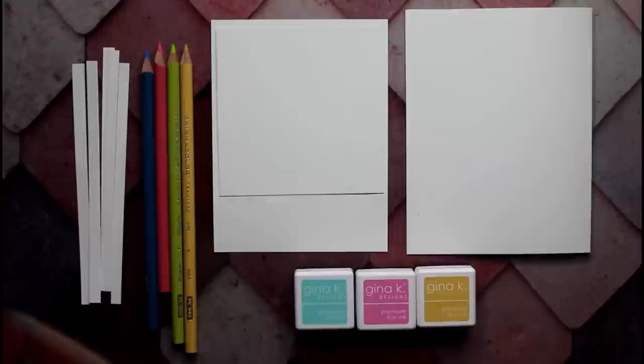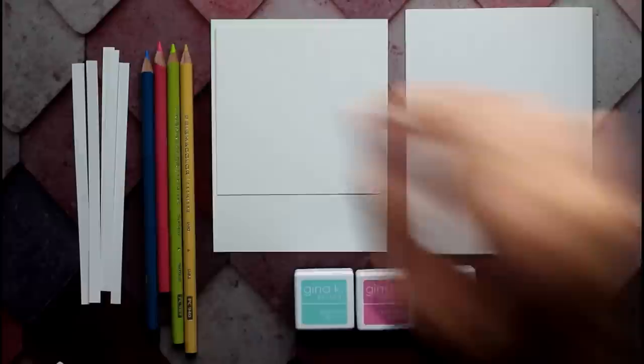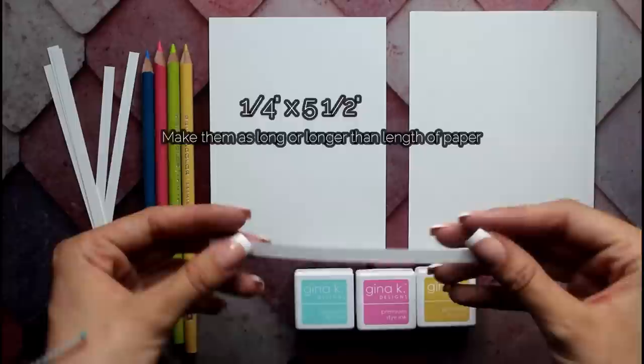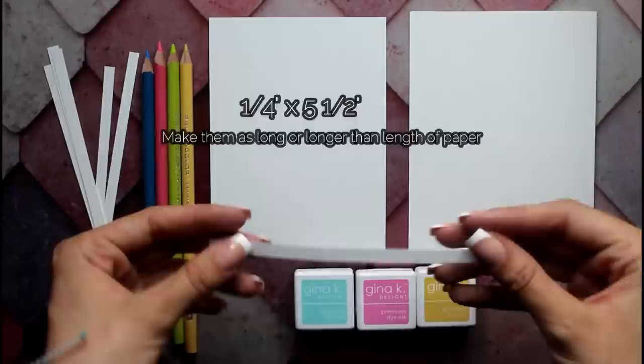These are some Prismacolor pencils that I'm going to be using to color in our image once we stamp it. This is a three and three-quarter square that I will be using, the three and three-quarter wreath builder, as well as a piece of paper that we will be using to create our background design. This is our layering card, and here I have quarter-inch strips cut out from normal paper which we're going to use to create our design.